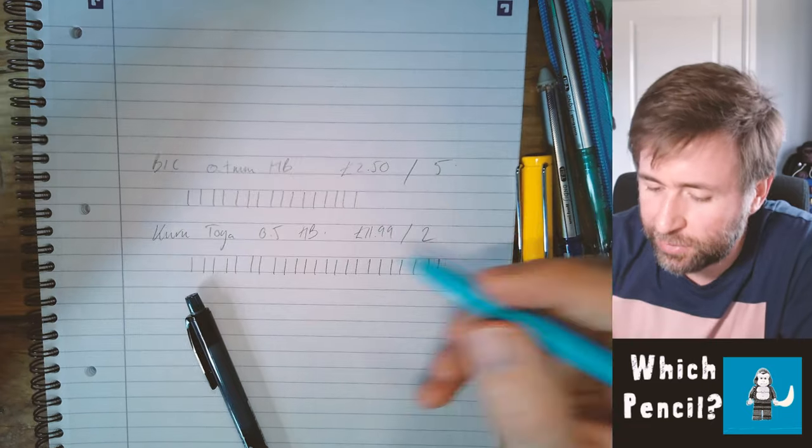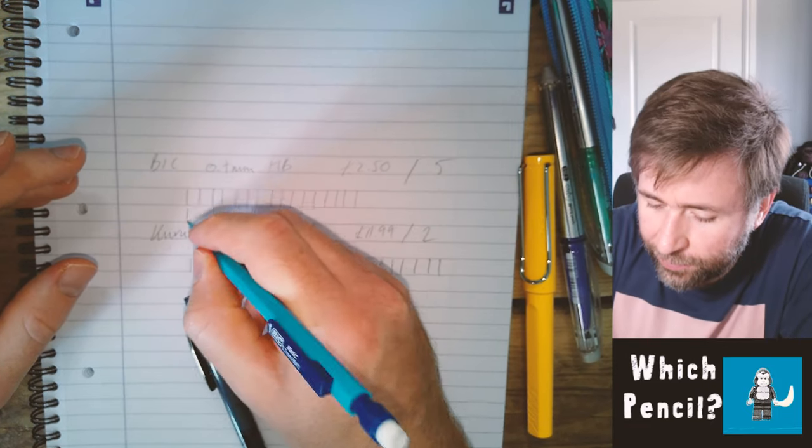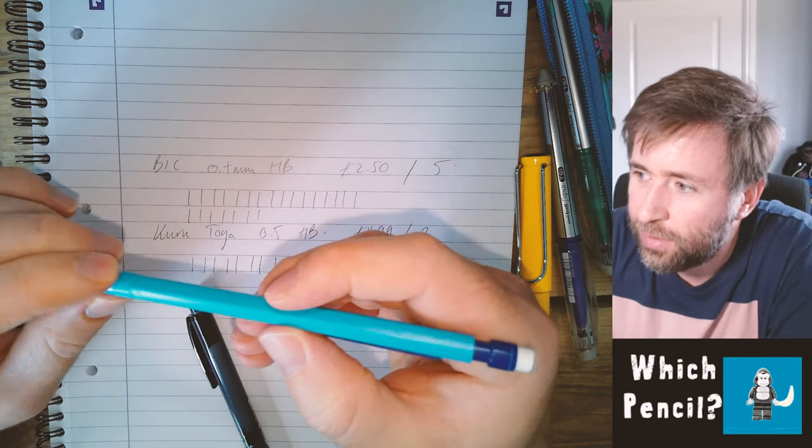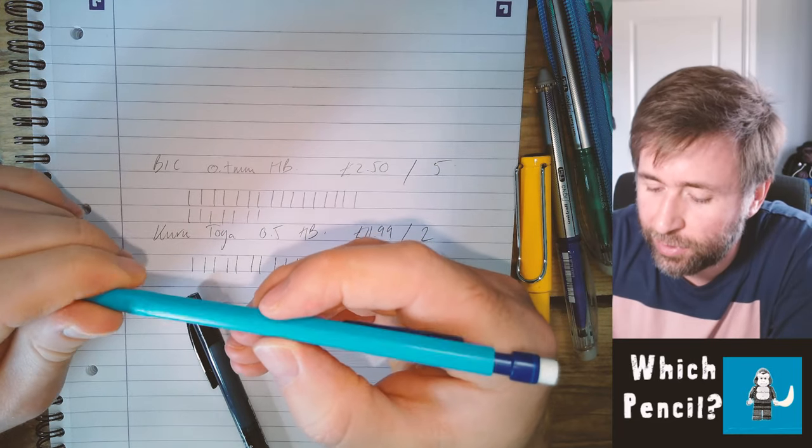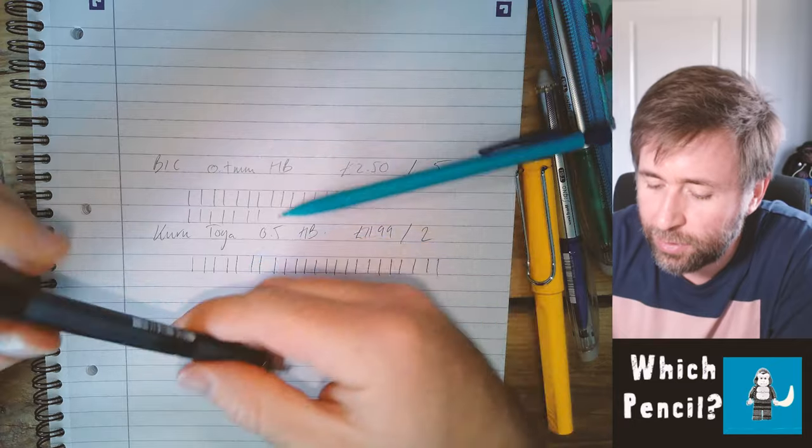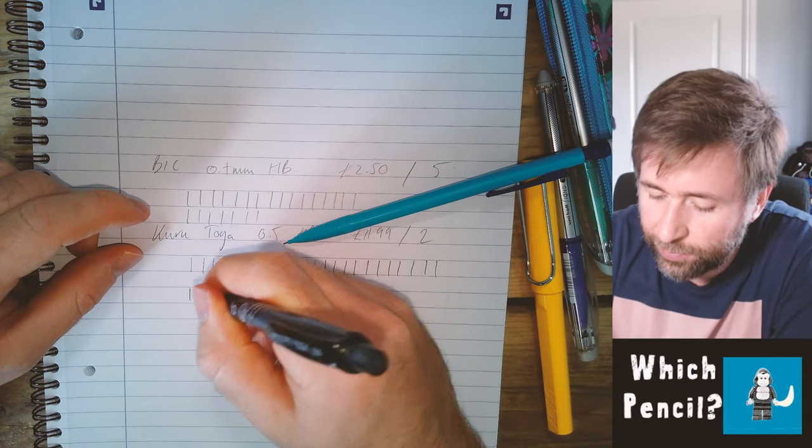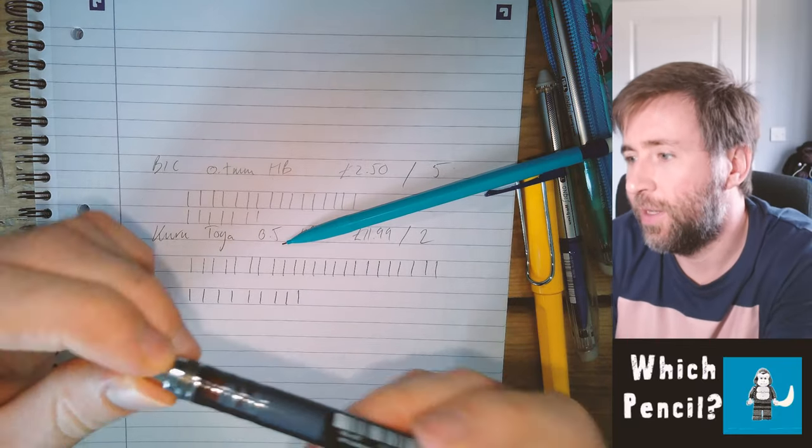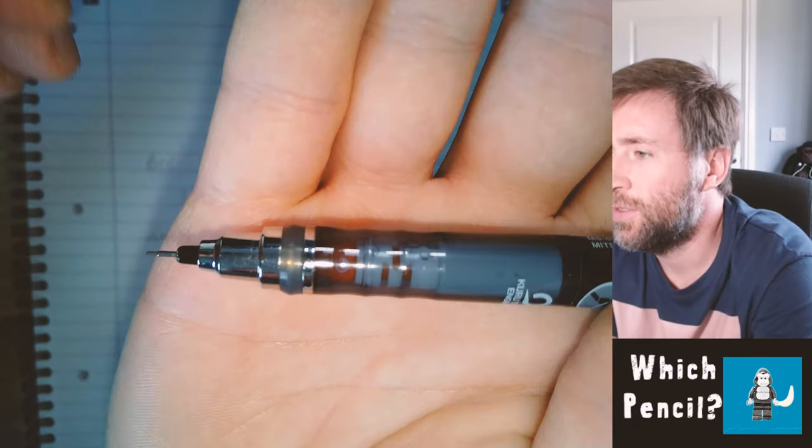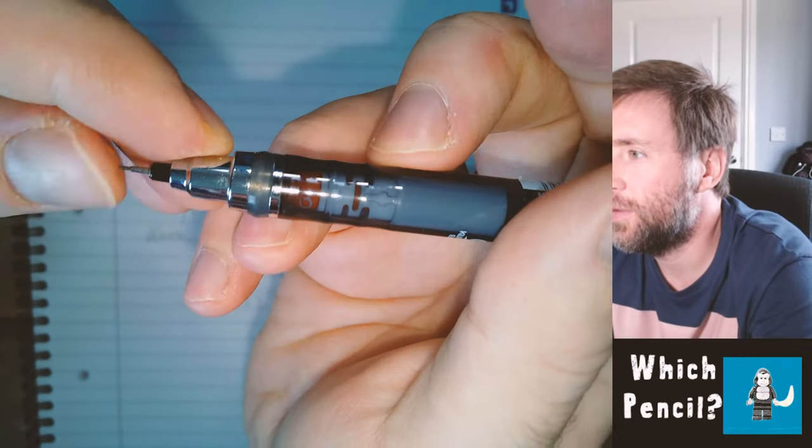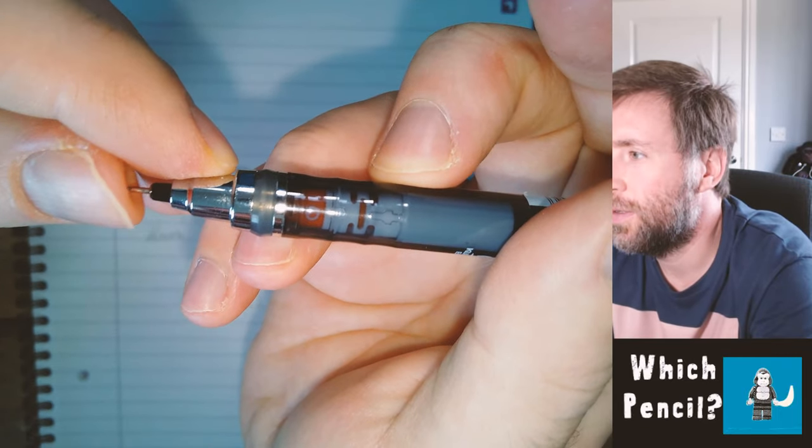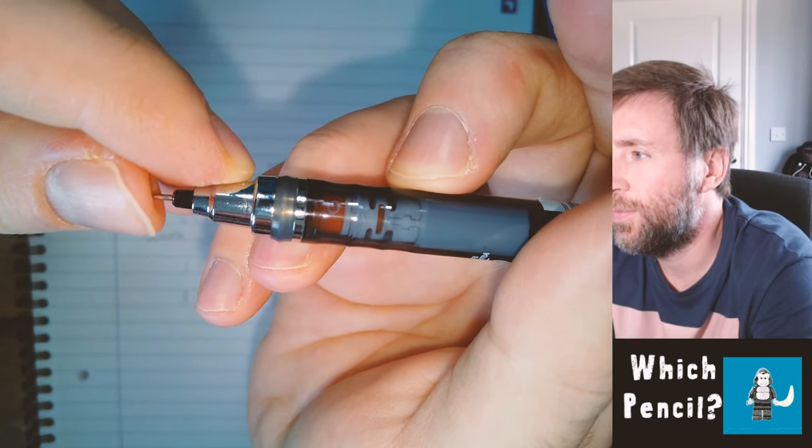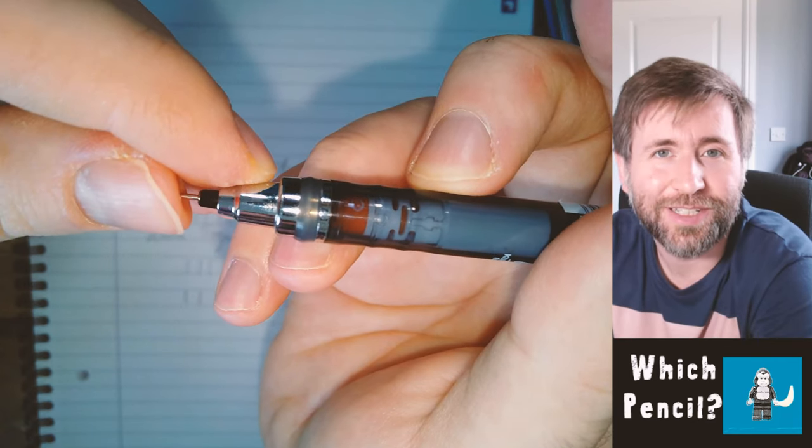So what you should actually do with all pencils is as you make lines, you should twist your grip on them. That's why pencils come with this hexagonal profile. But this Kuri Toga actually does that for you. So every single time you press down, there's a little mechanism in there that as you press it, you see it actually spins around. So it rotates the pencil for you.